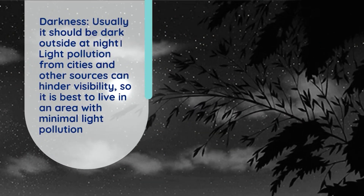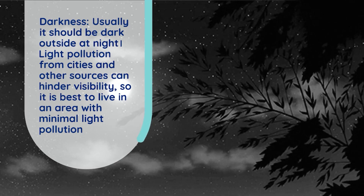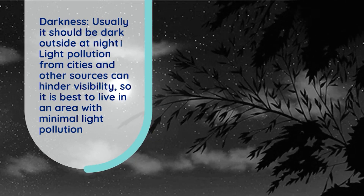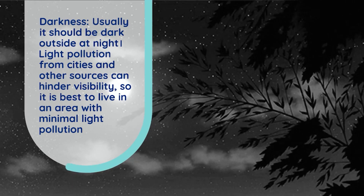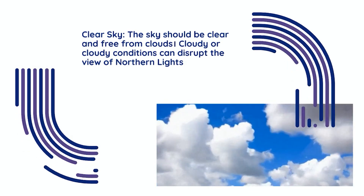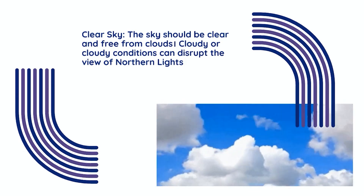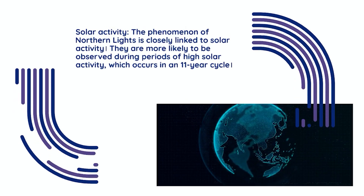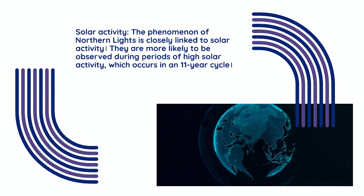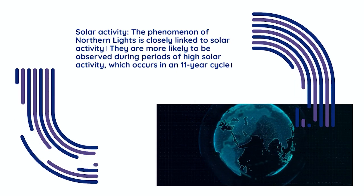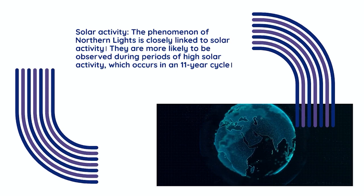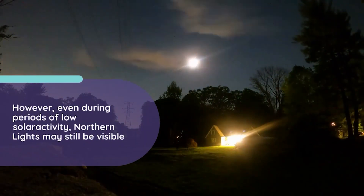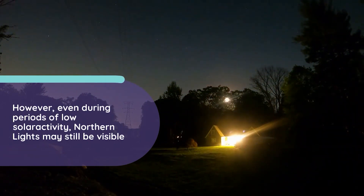Darkness: it should be dark outside, as light pollution from cities can hinder visibility, so it is best to be in an area with minimal light pollution. Clear Sky: the sky should be clear and free from clouds, as cloudy conditions can disrupt the view. Solar Activity: the Northern Lights are closely linked to solar activity and are more likely to be observed during periods of high solar activity, which occurs in an 11-year cycle. However, even during periods of low solar activity, Northern Lights may still be visible.